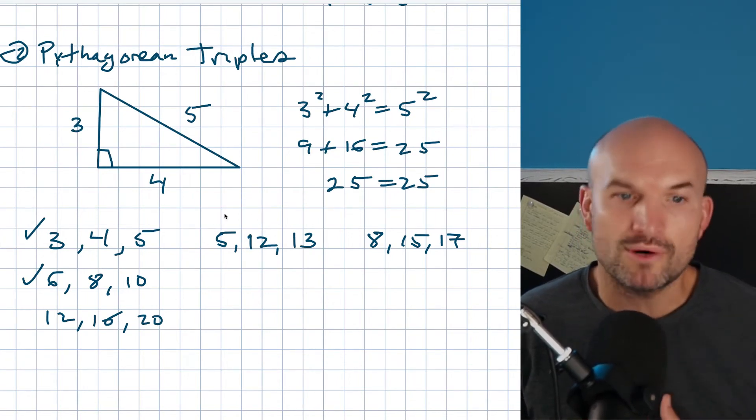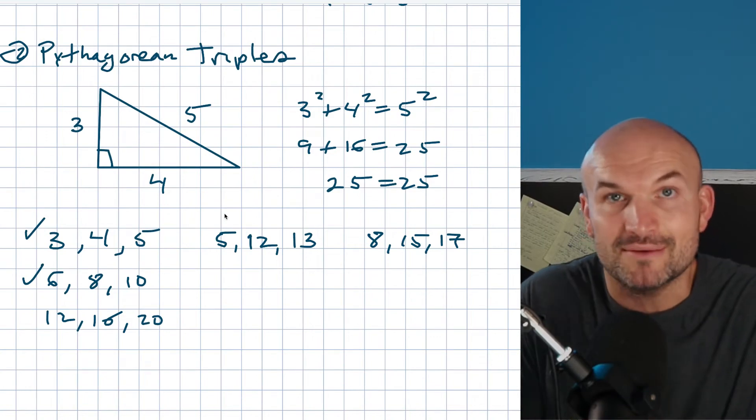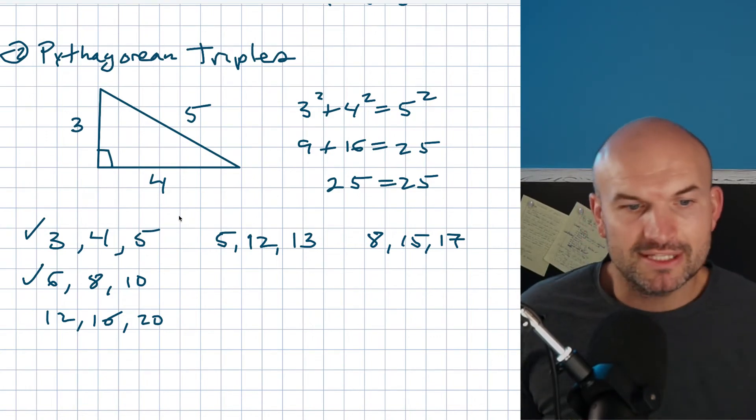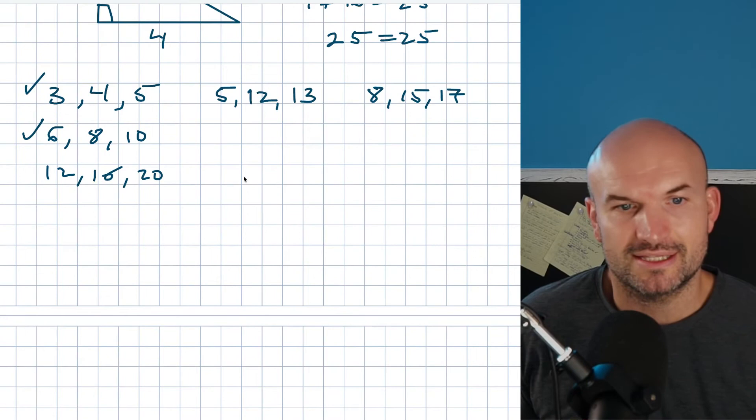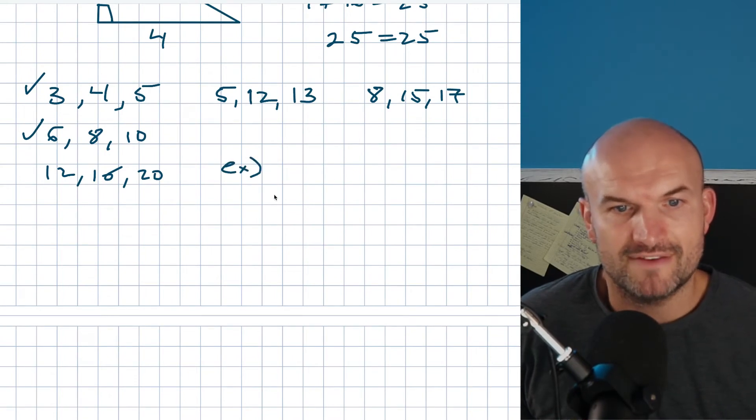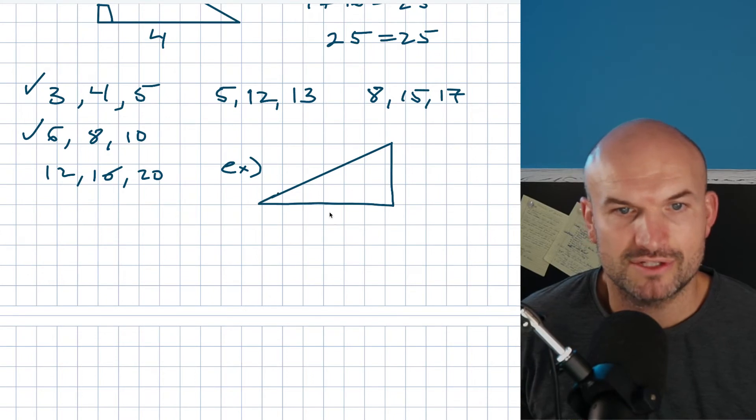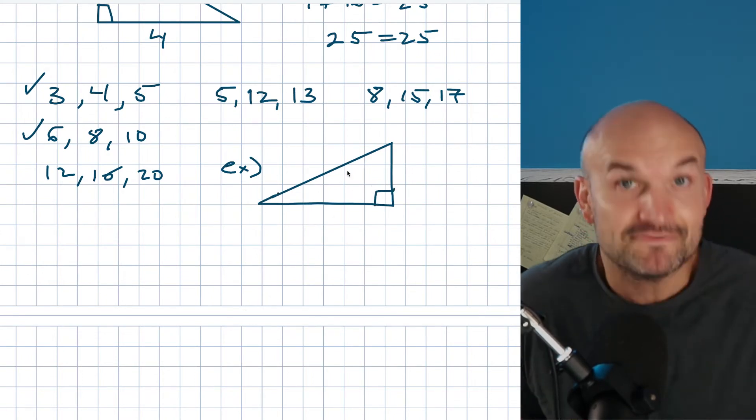The reason why they're so important is you don't need to do the Pythagorean theorem. Could you? Of course you could. But the cool thing is when you have a problem like this, you know, if I'm trying to find the missing length. Let's say my triangle looks like this—it's a right triangle, you have to have the right triangle.